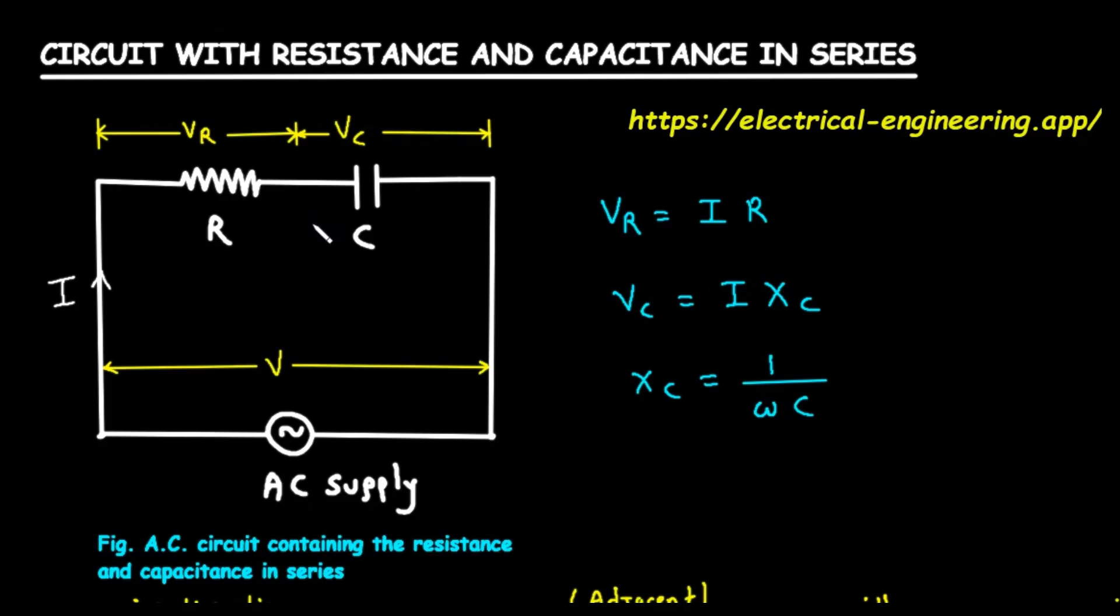First, let's look at our main circuit diagram, labeled FIG. AC circuit containing a resistance and capacitance in series. At the bottom, we see a circle with a sine wave inside it. This represents our AC supply. Unlike a DC battery which provides a constant voltage, an AC supply provides a voltage that continuously changes in a smooth, wave-like pattern. We label this total supply voltage as V.